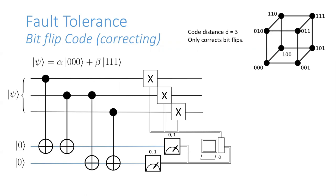To check for errors, we need auxiliary qubits in addition to our data qubits. We can't measure our qubits to do parity checks as in the classical code, so instead we project measurements onto another qubit in a way that only tells us if there's an error — not what the original state was. If we found out the state, we'd perform a measurement and collapse it, losing all the information.